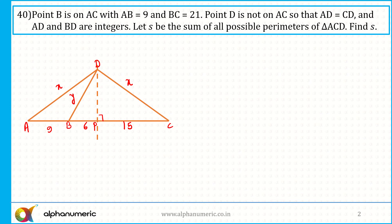We know BD is also an integer. So X and Y must be integers — that is the first important condition. The height DP equals H. It is not necessary that H is an integer; H can be a fraction or a root. So we cannot use the Pythagorean triplet approach.